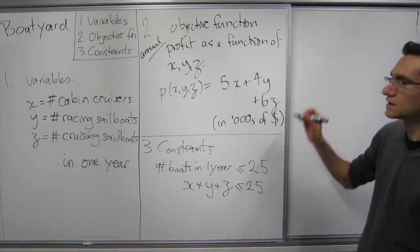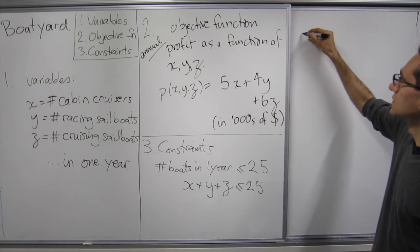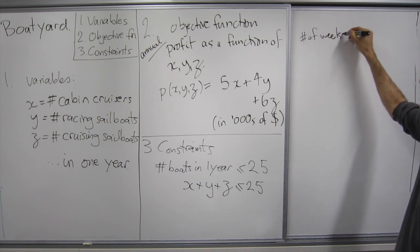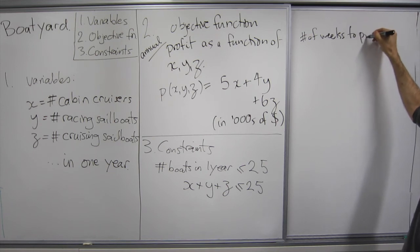Thus the second constraint deals with the number of weeks to produce boats is at most 48.